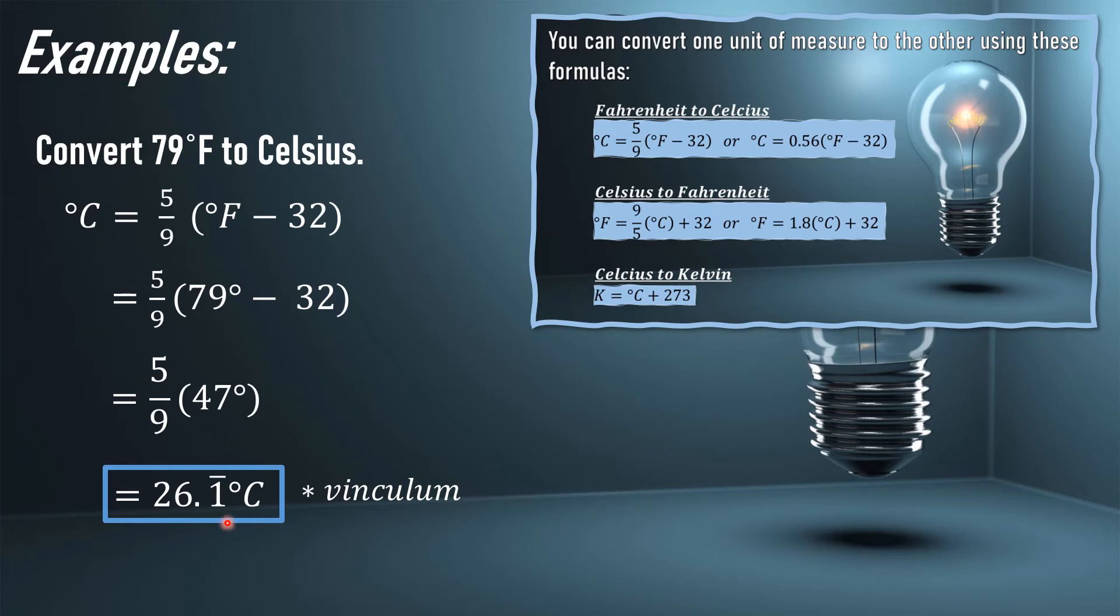The line you see above the number is called a vinculum. What is a vinculum? It represents a number where the digit repeats. For example, 26.1111... Instead of writing many 1s, we just put a vinculum on top of the 1.